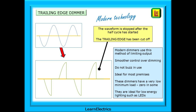And then we have trailing-edge dimmer switches — completely different, using more modern technology and different methods of manufacture. The waveform starts at zero and is then stopped after the half cycle has started. The trailing edge, the last bit, has been cut off. Modern dimmers use this method of limiting the output. It gives smoother control over dimming, and the switches do not buzz in use, making them ideal for most premises and situations. These dimmers have a very low minimum load, all the way down to zero in some switches, and they are ideal for low-energy lighting such as LEDs.